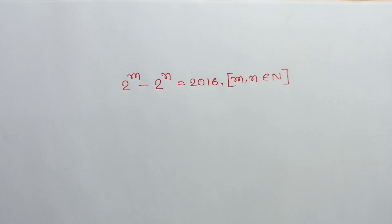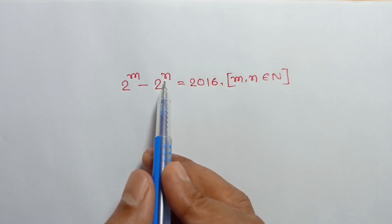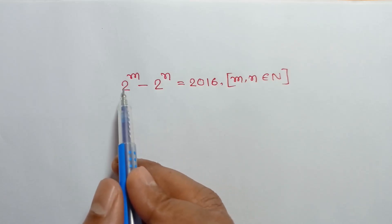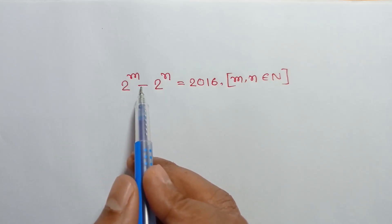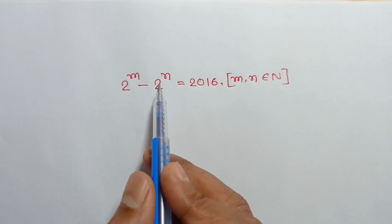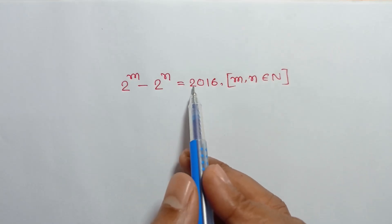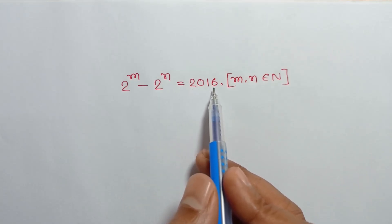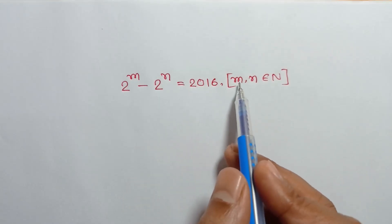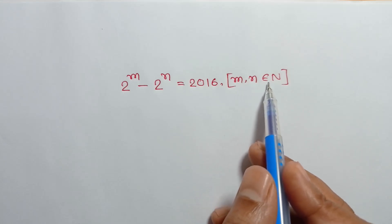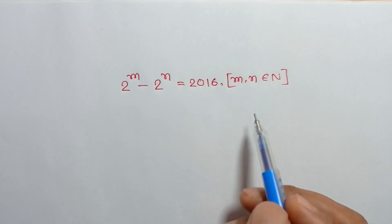Hi everyone, in this video I am going to show how to find the value of m and n, where 2 to the power m minus 2 to the power n is equal to 2016, and m and n are natural numbers.